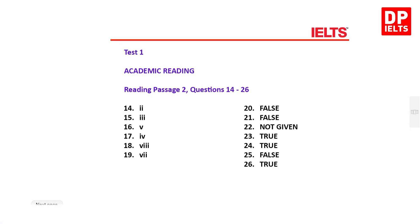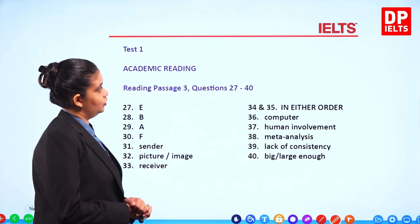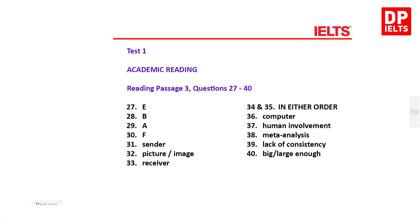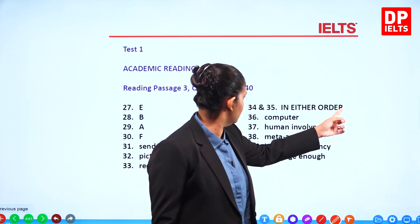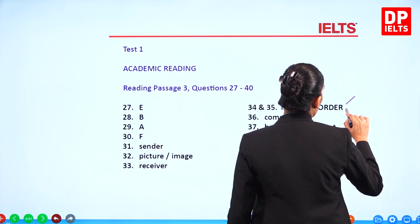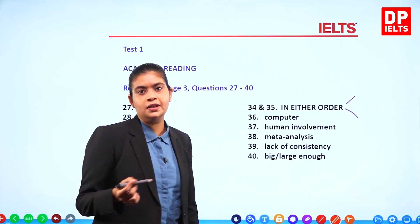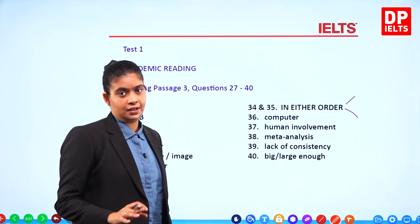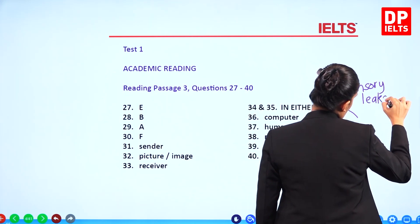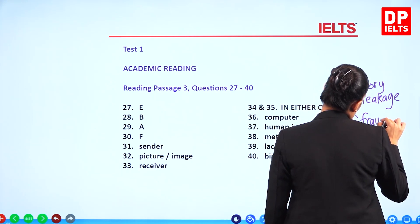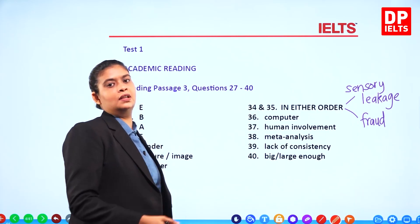Reading Passage 2 answers, and then finally Reading Passage 3 answers. For questions 34 and 35, the two answers can be in either order. It should be 'sensory leakage' and 'fraud' — so you could have 'fraud and sensory leakage' or 'sensory leakage and fraud'. Either order is completely fine.